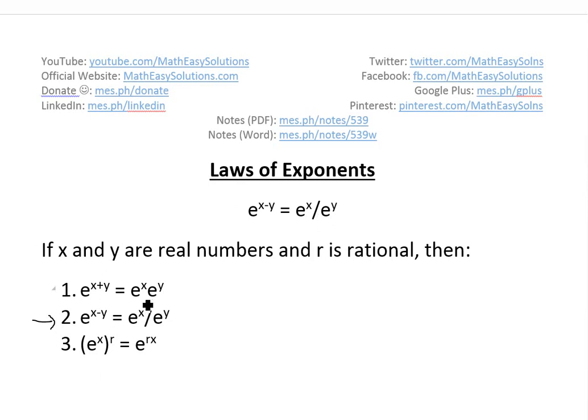I'll quickly recap on these three laws. I did this one in my last video and I'll do this one in a later video, but I'll go over this one today. If x and y are real numbers and r is rational, once again rational just means any numbers that can be written as integers, let's say one divided by three, that is a rational number, the number three or two, et cetera.